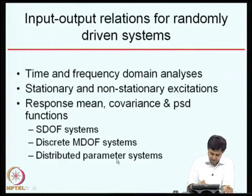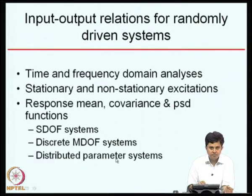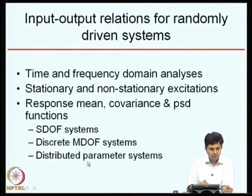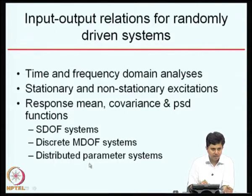For distributed parameter systems, the impulse response function and frequency response function become functions of spatial variables — both the drive point and the measurement point. So it is a scalar for single degree of freedom, a matrix for discrete multi-degree of freedom systems, and functions of spatial variables for distributed parameter systems.